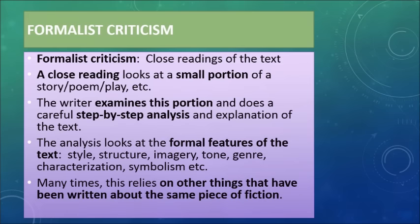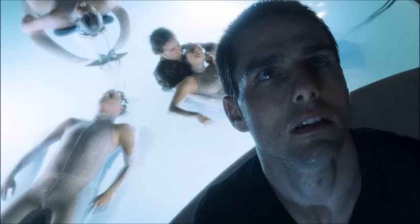A lot of times when people write this type of criticism, they also look at other things that have been written in this type of criticism. For example, when you read Fun Home, you'd look at the genre of the graphic novel, the tone the author uses to talk about her family, the symbolism of being in a funeral home. To take another example — this is a still from Minority Report, which you read last week — what are the conventions of science fiction? What does pre-crime mean? What does that symbolize about racial profiling today? It's very symbolic of prejudging people.